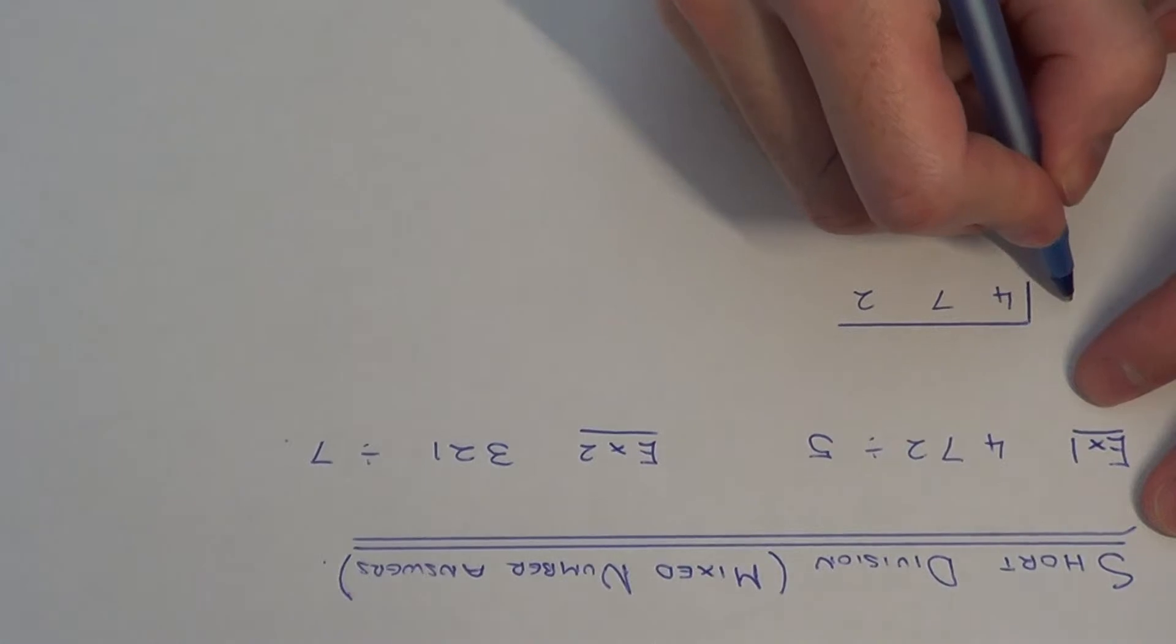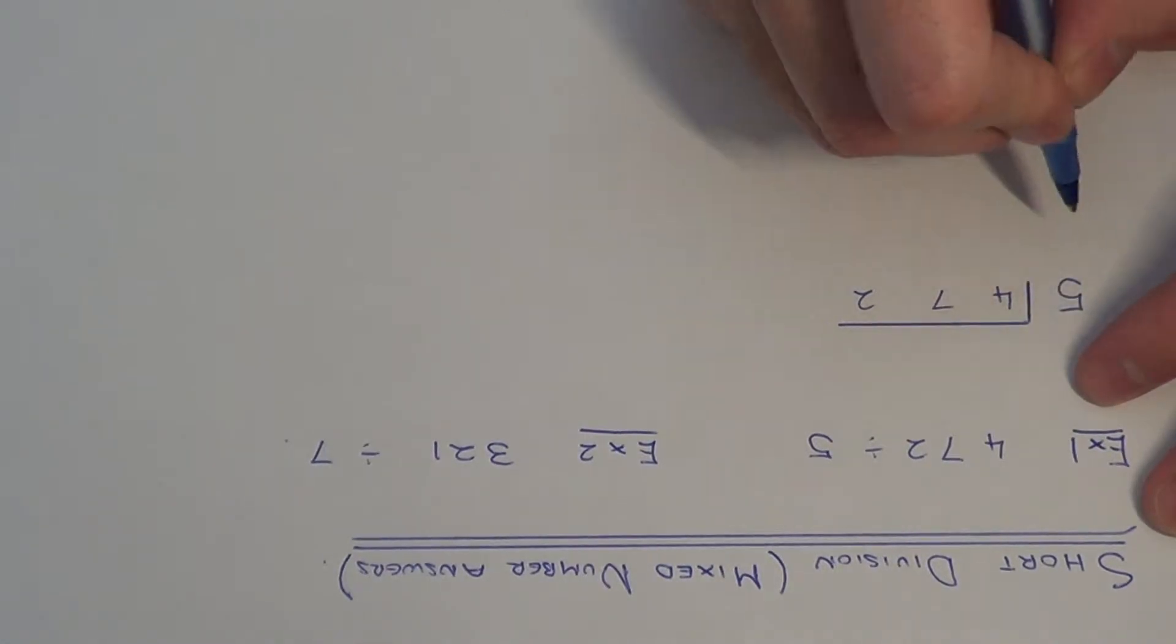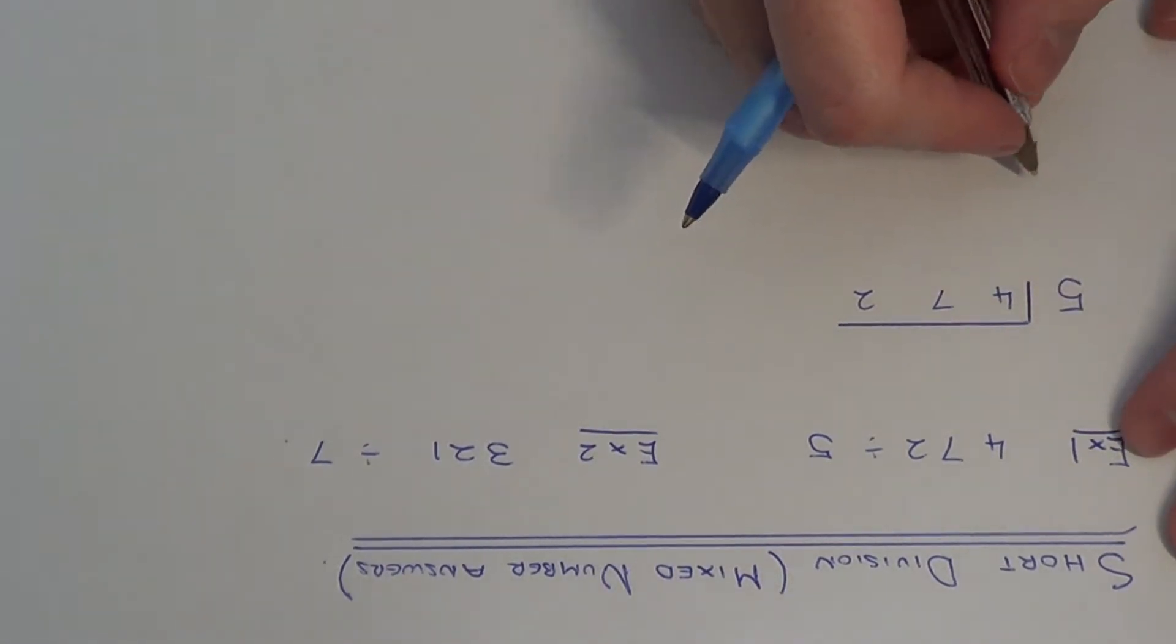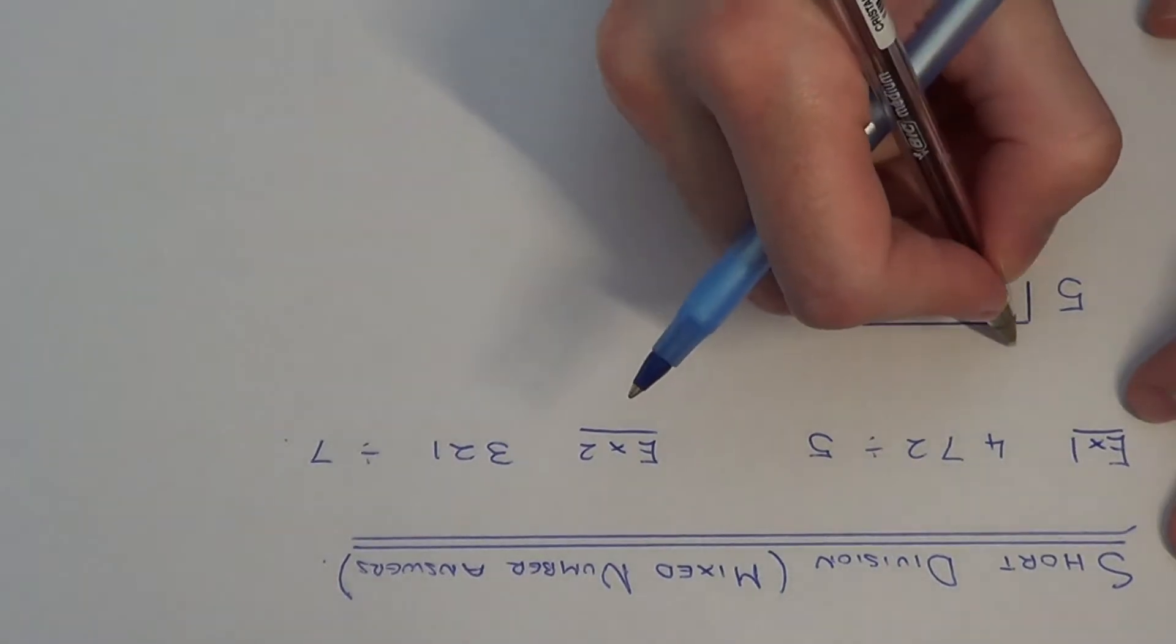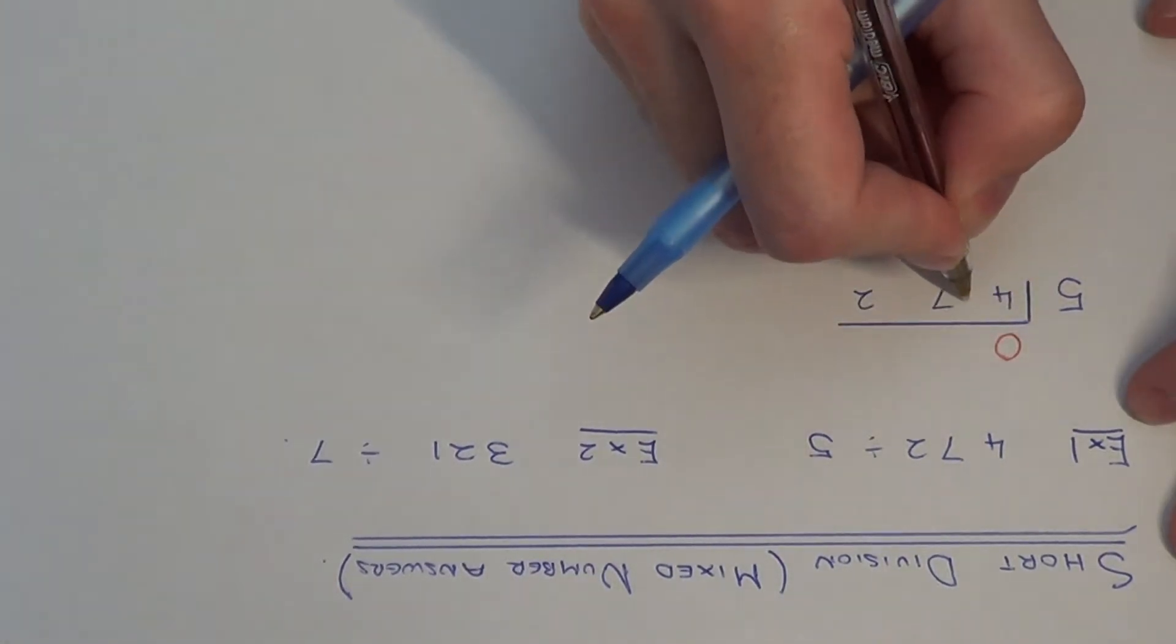And the number that we're dividing by goes at the start. So first of all we have 4 divided by 5. We can't do this division, so let's just put 0 and the remainder of 4.